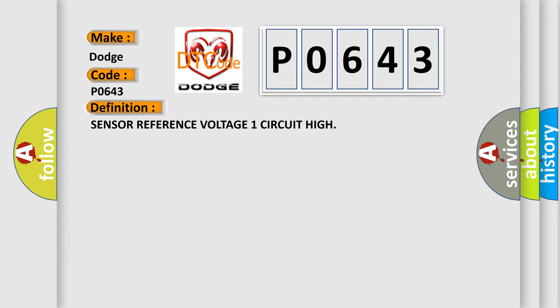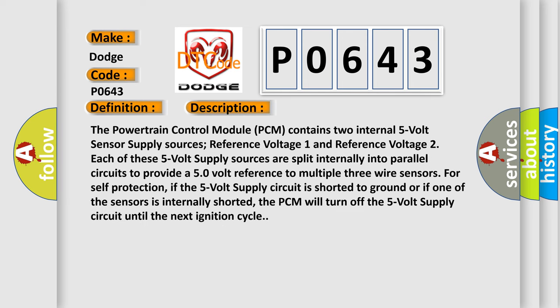And now this is a short description of this DTC code. The powertrain control module PCM contains two internal five-volt sensor supply sources: reference voltage one and reference voltage two. Each of these five-volt supply sources are split internally into parallel circuits to provide a five-volt reference to multiple three-wire sensors. For self-protection, if the five-volt supply circuit is shorted to ground or if one of the sensors is internally shorted, the PCM will turn off the five-volt supply circuit until the next ignition cycle.